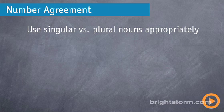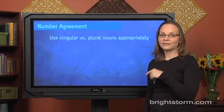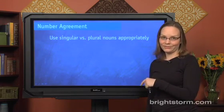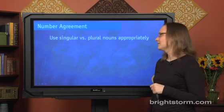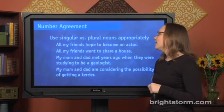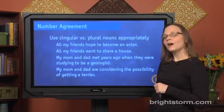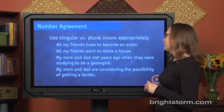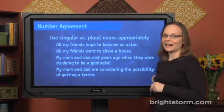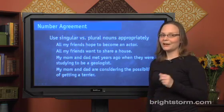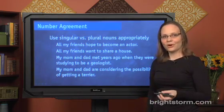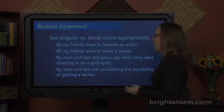Next: number agreement. Number agreement is the idea that we want to use singular and plural nouns appropriately. Let's look at an example — "All my friends hope to become an actor." Hopefully you can tell that's wrong: "all my friends" is plural, so "an actor" should be "actors."